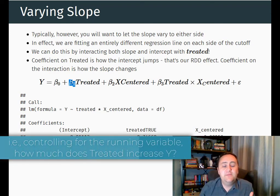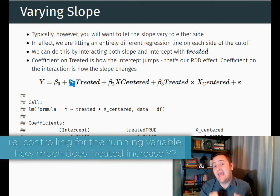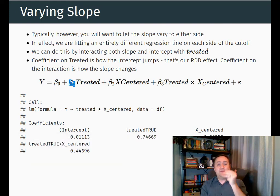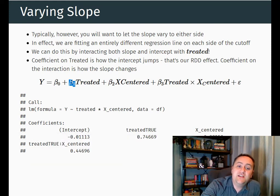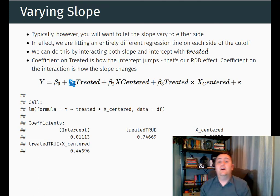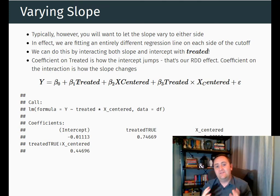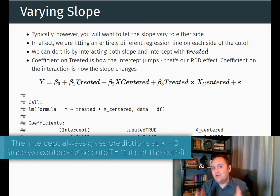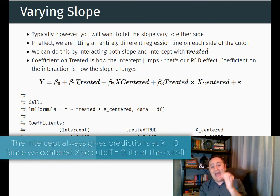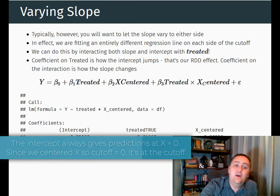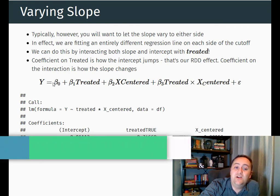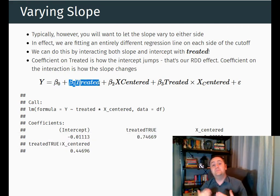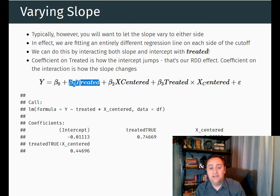And why are we focusing on this intercept? Because we centered the x variable. Because we centered the x variable, this intercept is our prediction of what the difference between the non-treated and treated people is when the x value is 0. When is x equal to 0? At the cutoff. So at the cutoff, what is the difference between the treated and untreated group? That is given by beta_1 — that's how much the intercept jumps by when we go from untreated to treated. So that gives us our regression discontinuity effect.